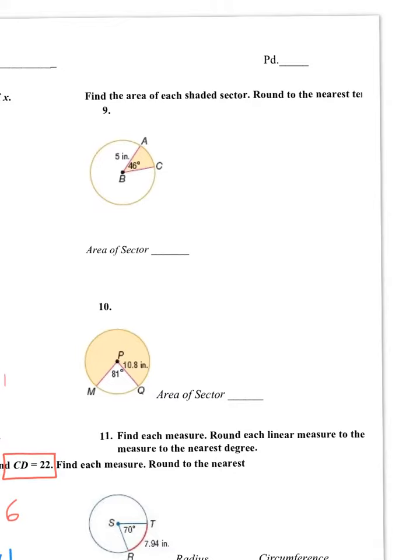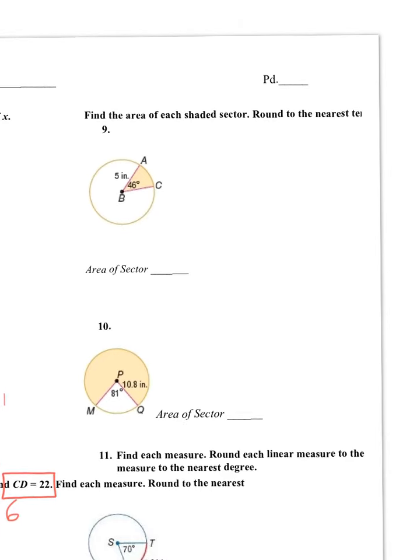Okay, in question number 9, they want the area of the sector. So for the area of the sector, the formula is pi radius squared, which is a formula for the circle. And then you just want a portion of that, which is times the measurement of the angle over 360. So by substituting all the information, we're going to have pi.